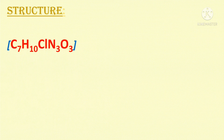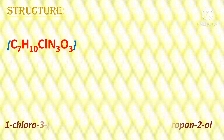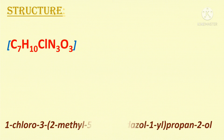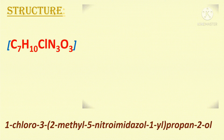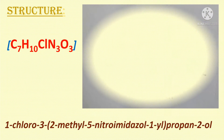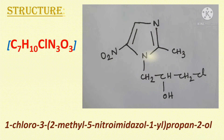The molecular weight of ornidazole is 219.6 grams per mole. The second part is the structure of ornidazole. The molecular formula of ornidazole is C7H10ClN3O3, and the IUPAC name is 1-chloro-3-(2-methyl-5-nitroimidazol-1-yl)-2-propanol. The actual structure of ornidazole is displayed on your screen.